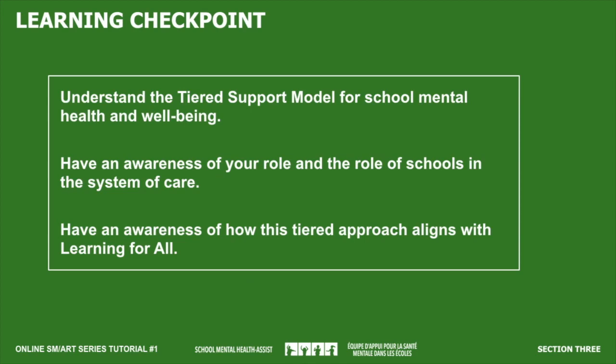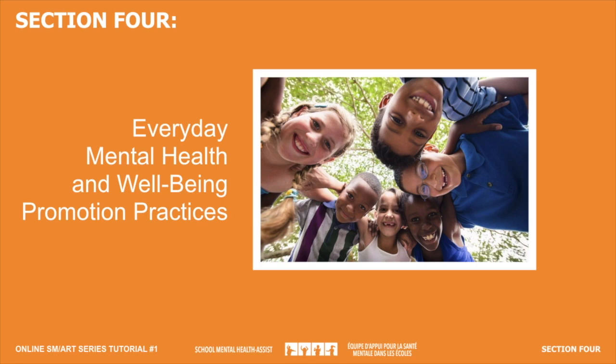Learning in this section included an overview of tiered support models for mental health, an introduction to the Aligned and Integrated Model for student mental health at school, and a description of your role as an educator within this tiered model. Sections 1–3 of the tutorial on mentally healthy classrooms provided provincial context, offered a summary of common terms, and introduced the multi-tier AIM approach to supporting student mental health at school. In this final section, we move to the applications of this learning — putting everyday mental health practices into place to create and sustain mentally healthy classrooms.